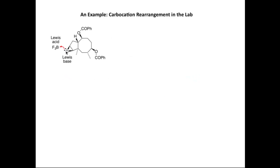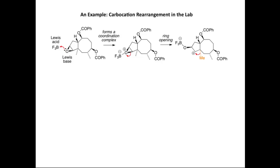The mechanism starts by taking a lone pair on the oxygen of the epoxide and donating it toward the Lewis acid, forming a coordination complex. The epoxide ring then opens selectively within the coordination complex to form a carbocation, which triggers a series of carbocation rearrangements. The first thing that happens is a classic 1,2-alkyl shift: the methyl group on the neighboring carbon atom moves from the bottom of the molecule to this position, forming a new carbon-carbon bond on the bottom face and converting the secondary carbocation to a tertiary carbocation.